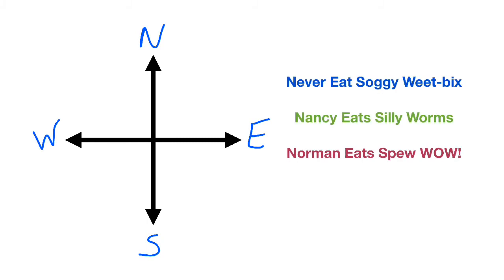You may have heard of Never Eat Soggy Wheat Bix before to help you remember North, East, South and West. But you could have Nancy Eat Silly Worms or Norman Eat Spew. Wow! Totally up to you, as long as you remember N-E-S-W.